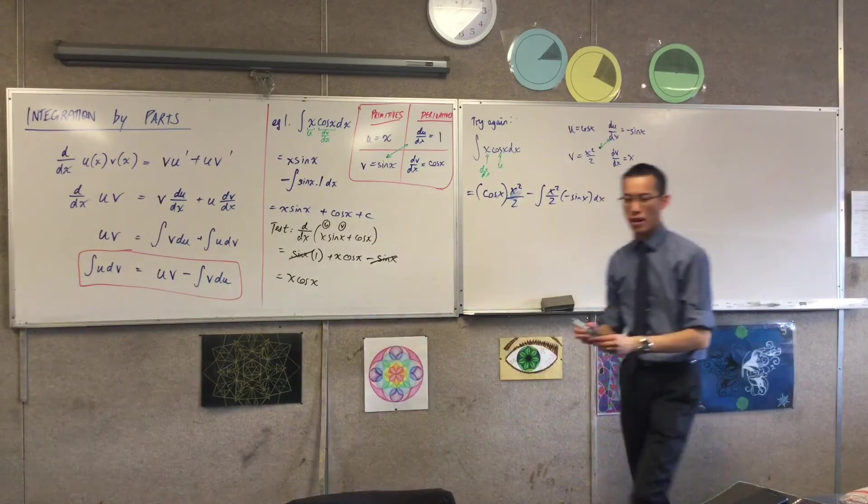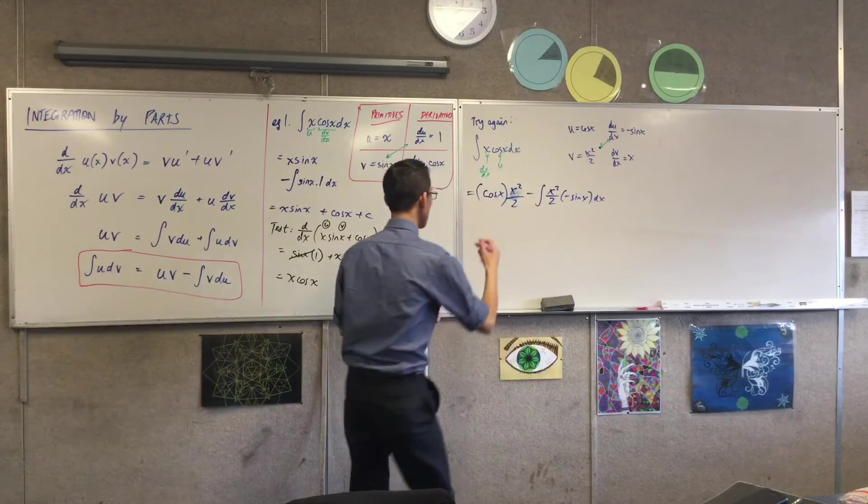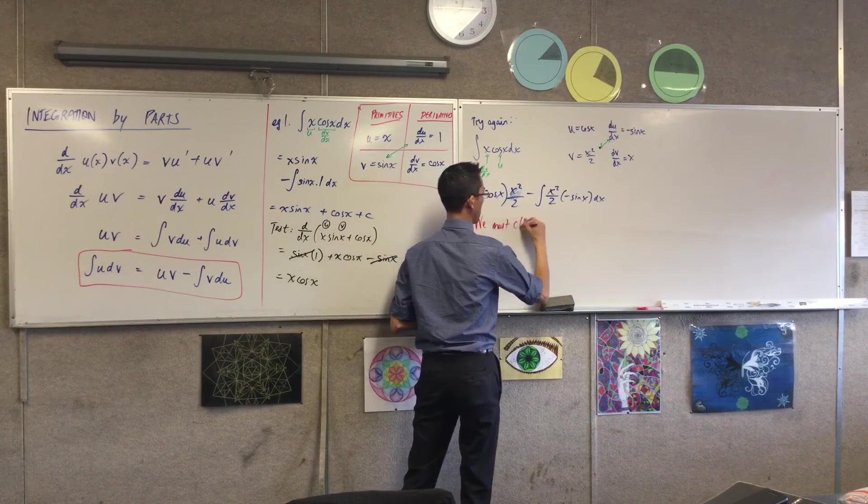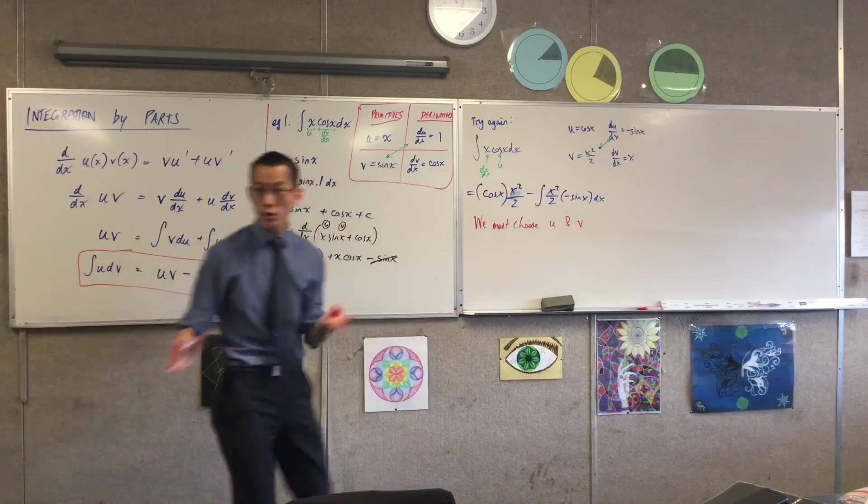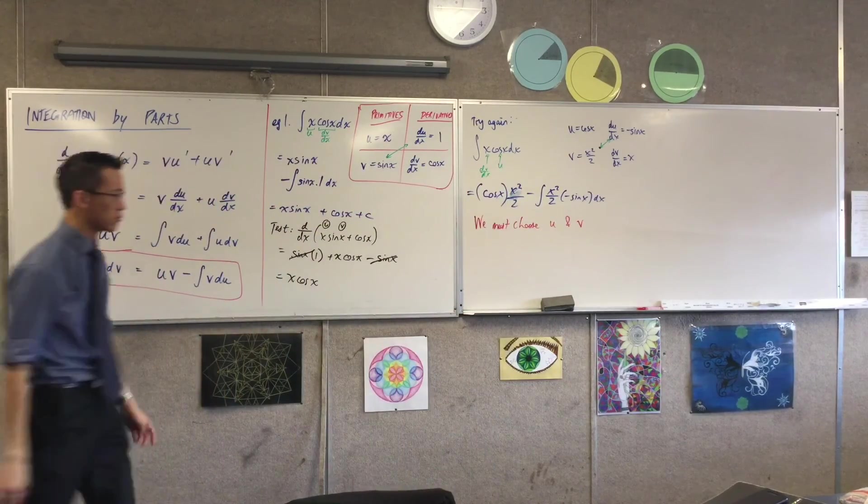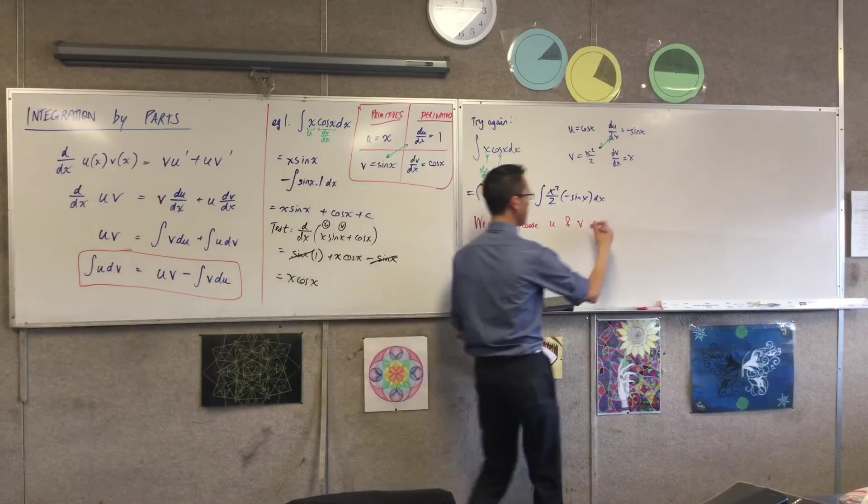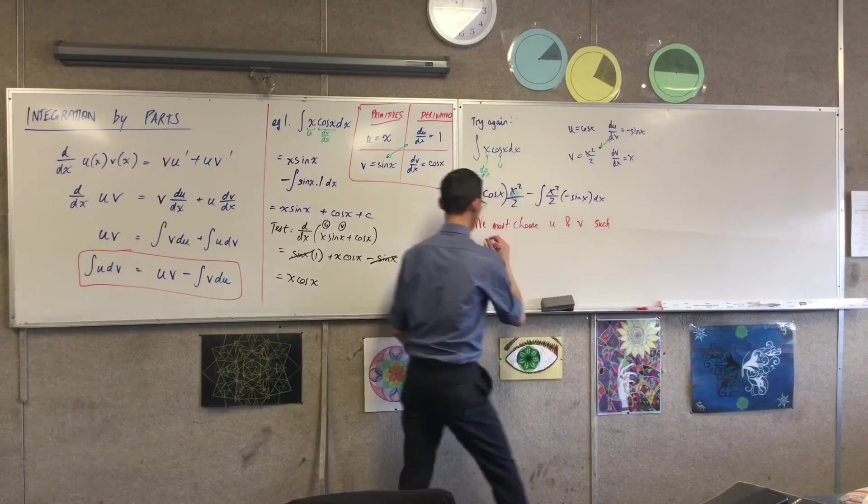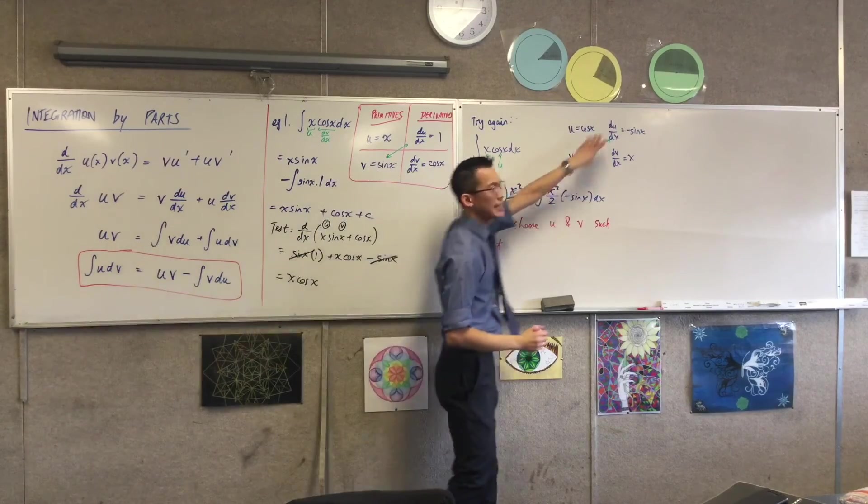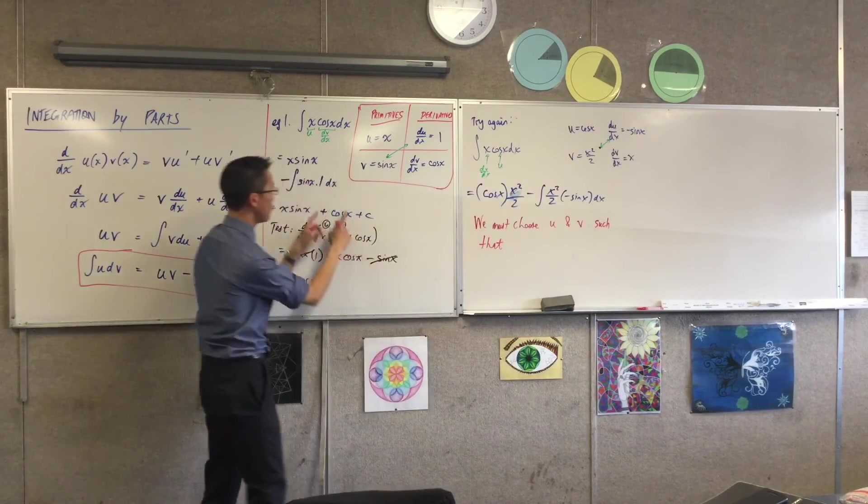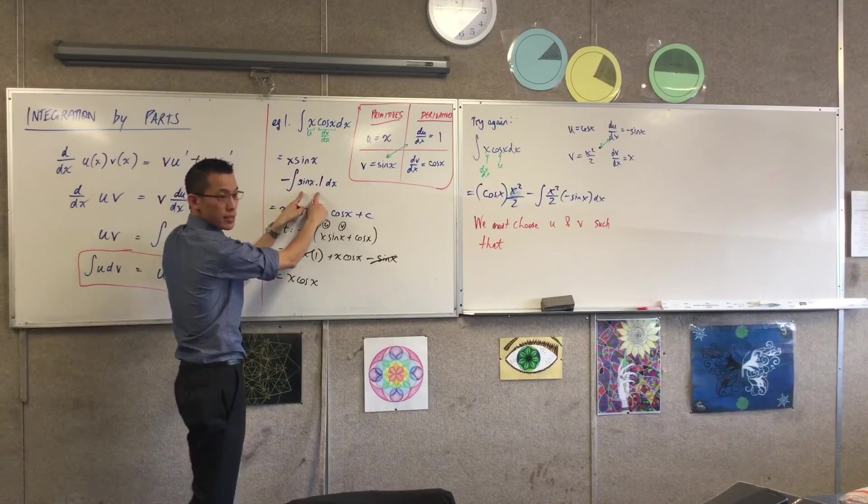Here's what I'm going to ask you to write down. We must choose u and v. Now, this is not the only criteria, but it is the most important criterion. Such that, where's the arrow going between? It's v and du. That's the thing that has to be integrated here. And this time, it was sin x, super easy.